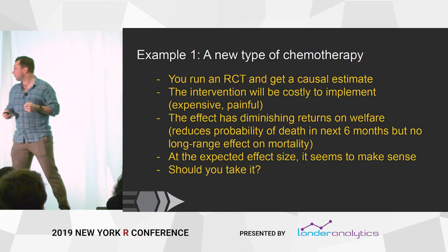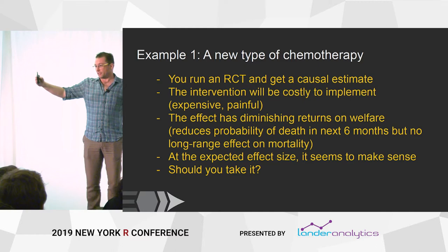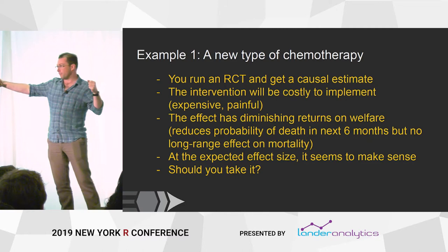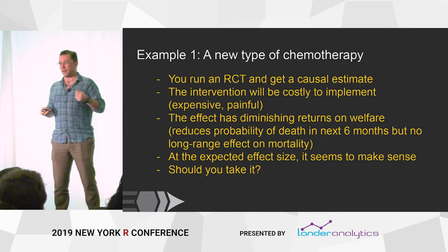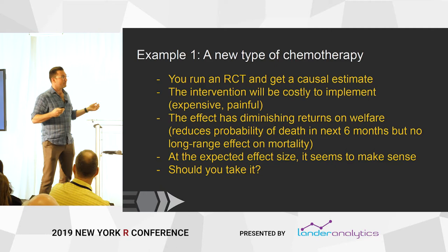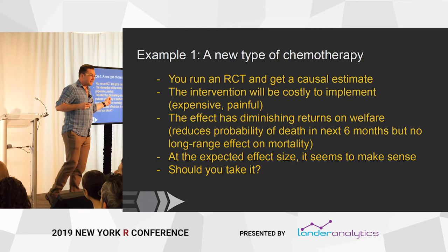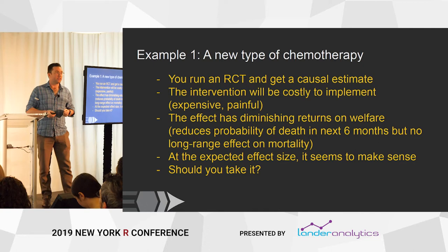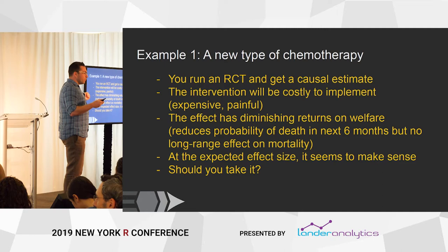It also has diminishing returns on welfare. If you're 85, you're probably going to die pretty soon. So extending your life from this condition by five years — you might not value that very much because you might die of something else in those five years, or you might just be discounting and not caring much about the future. At the expected effect size estimated in our model, it has a positive effect. Looking at the expected value, I'm better off doing this than not doing it. Should you take it? Well, I haven't given you enough information.